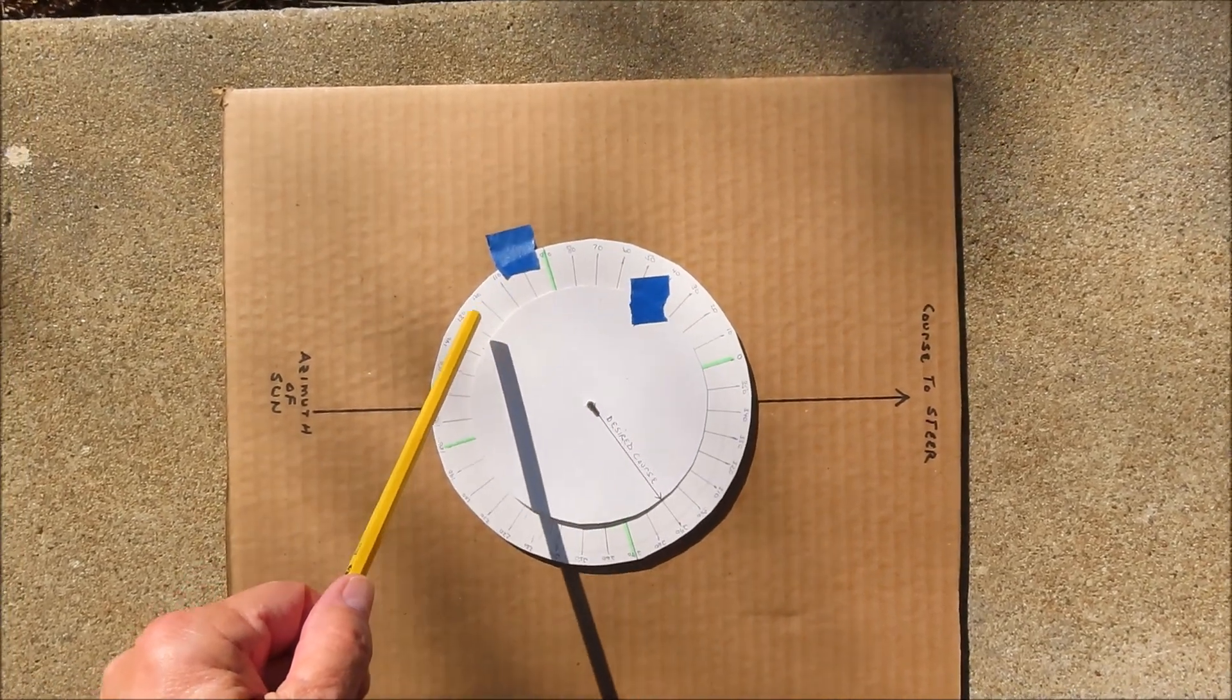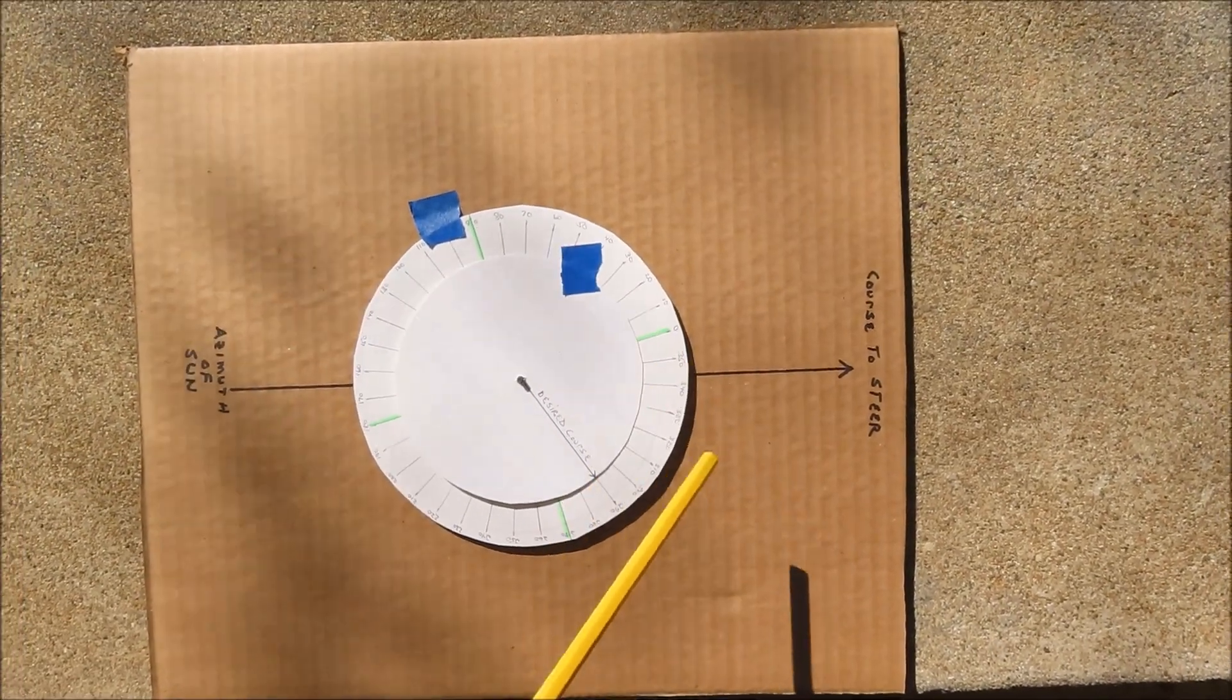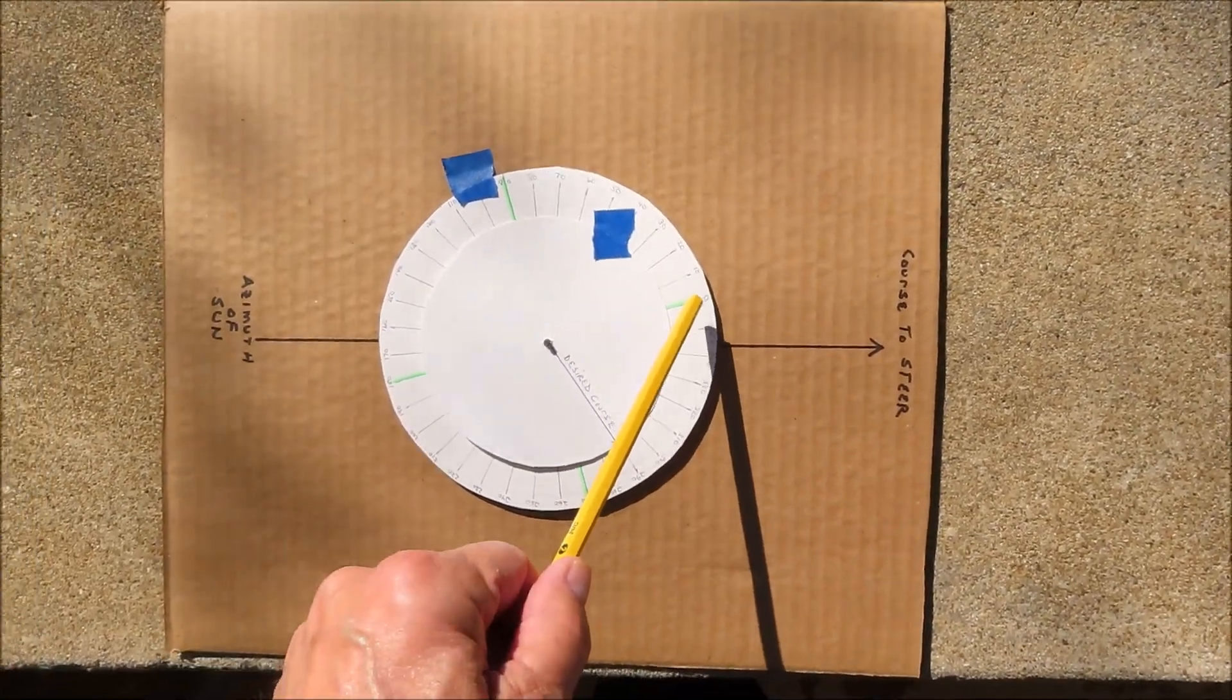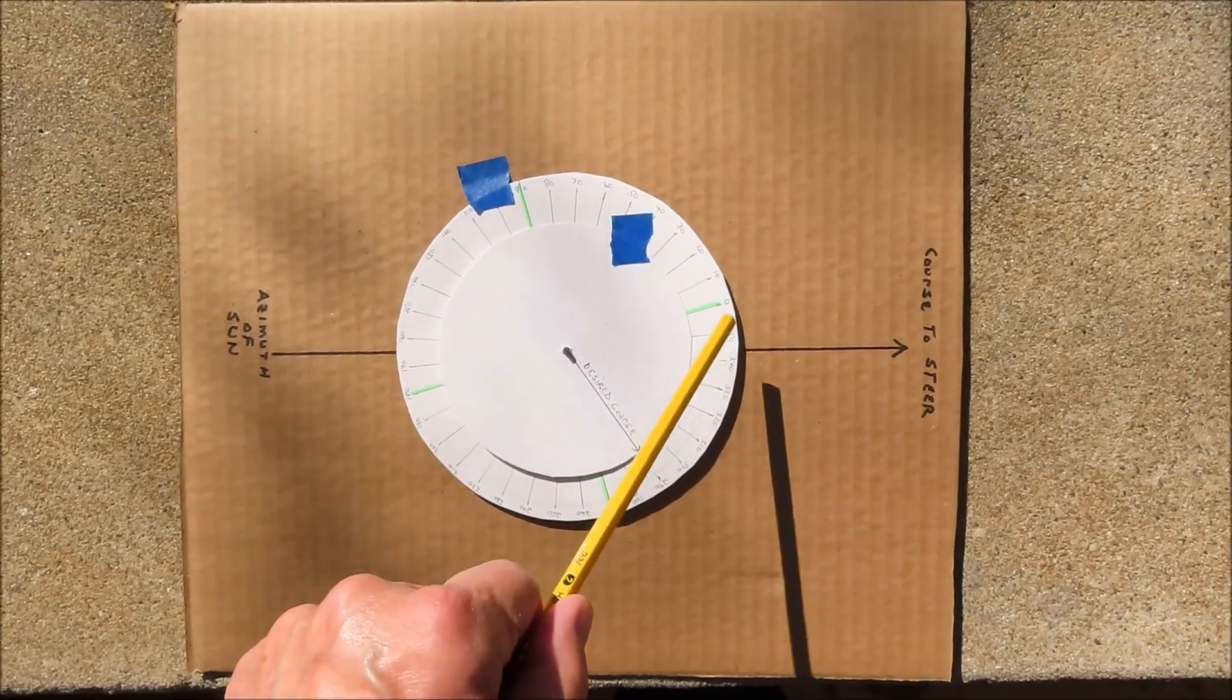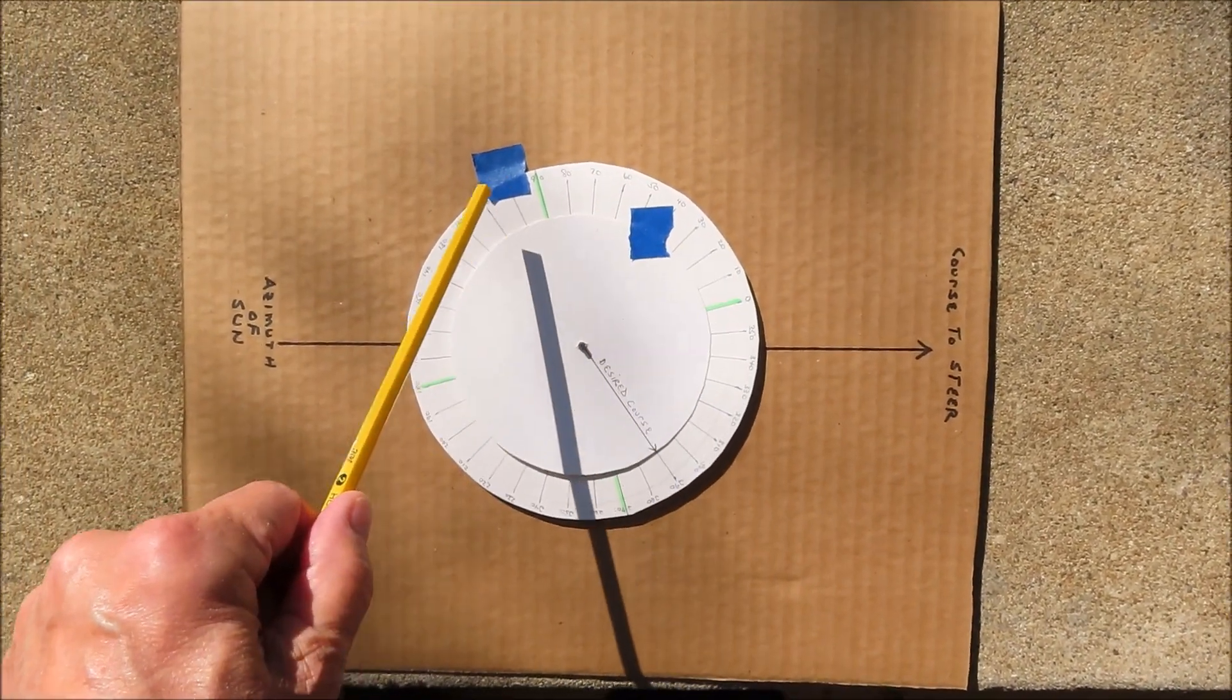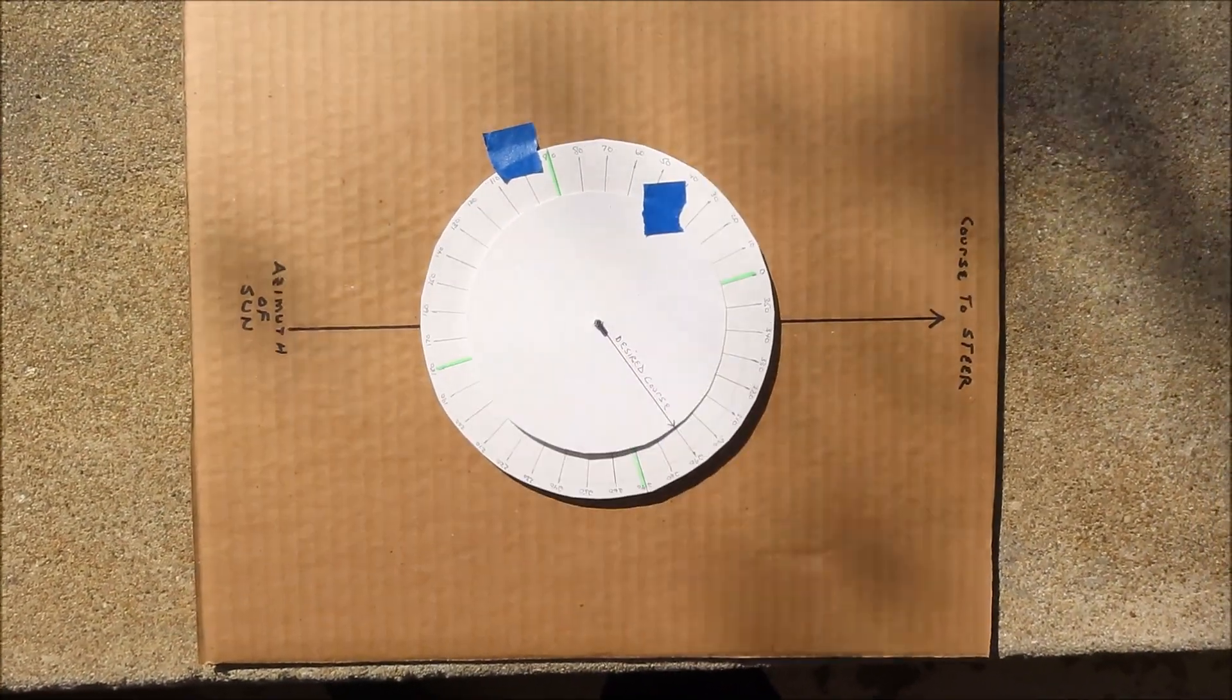One of them has the 360 degree markings on it. I'll point out that they're backwards. They increase going counterclockwise like this. Normally on a compass, the degree markings increase clockwise. But on the Bagnold, they're running backwards like this. I think that's because you're working with the shadow of the sun.